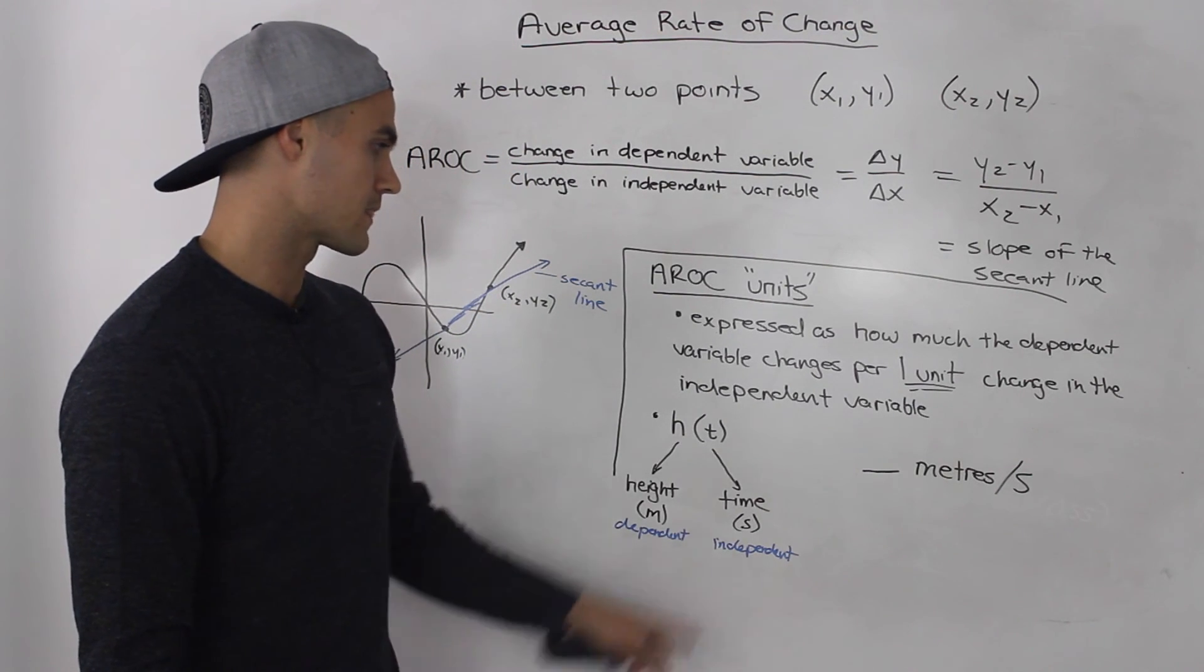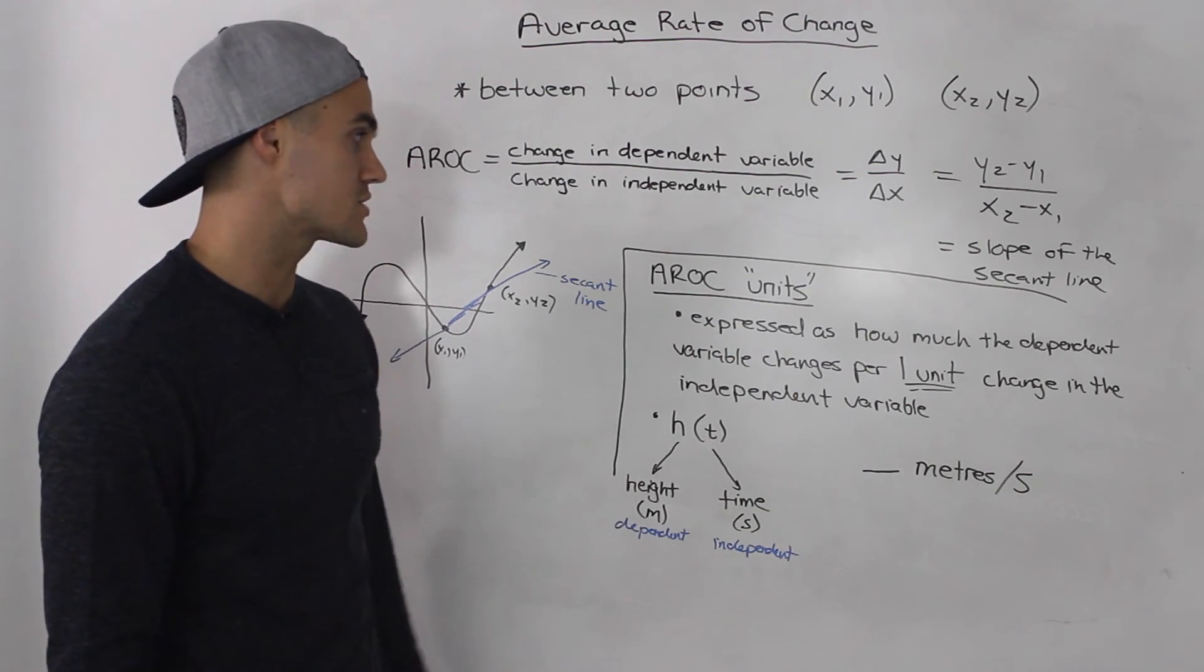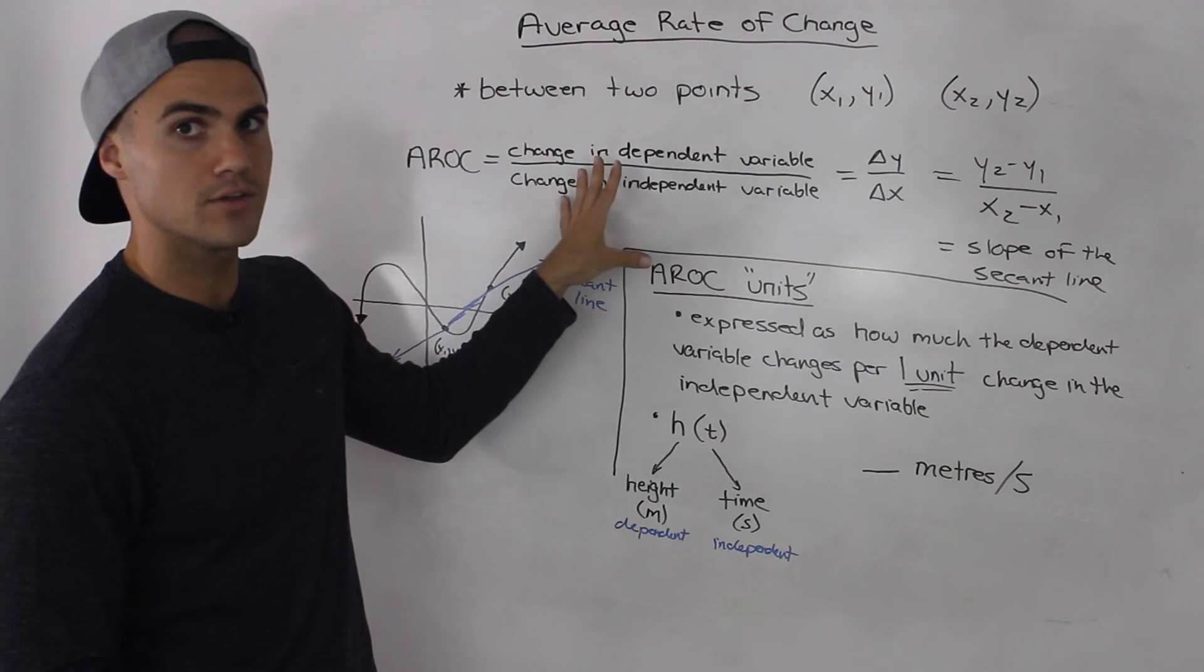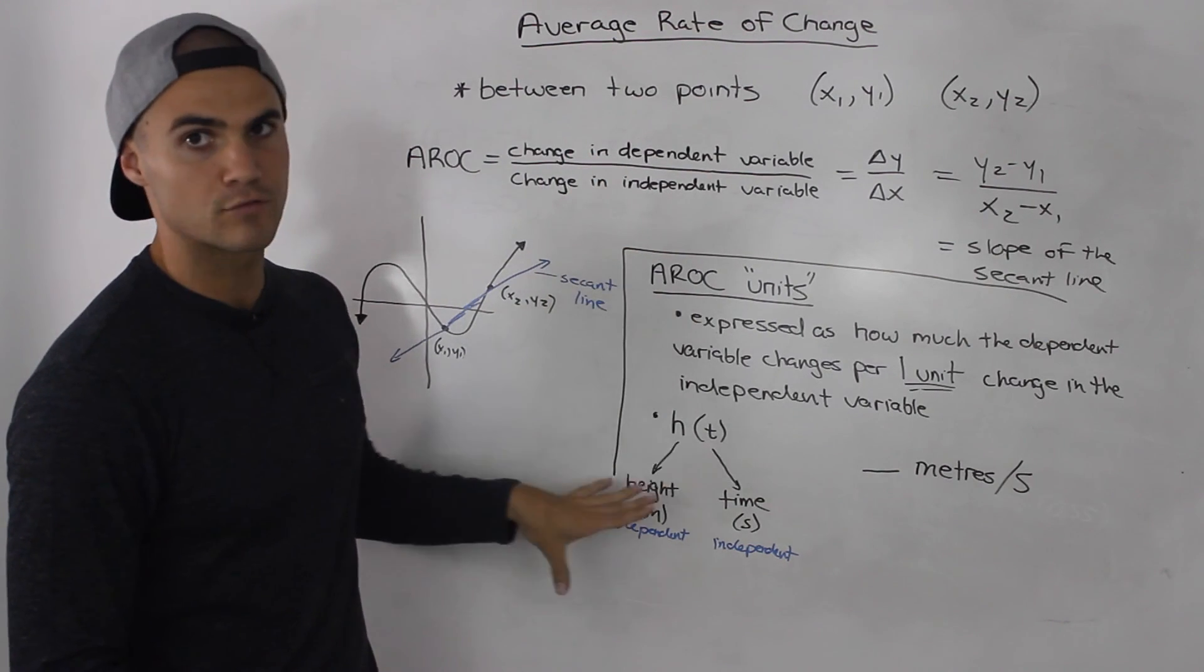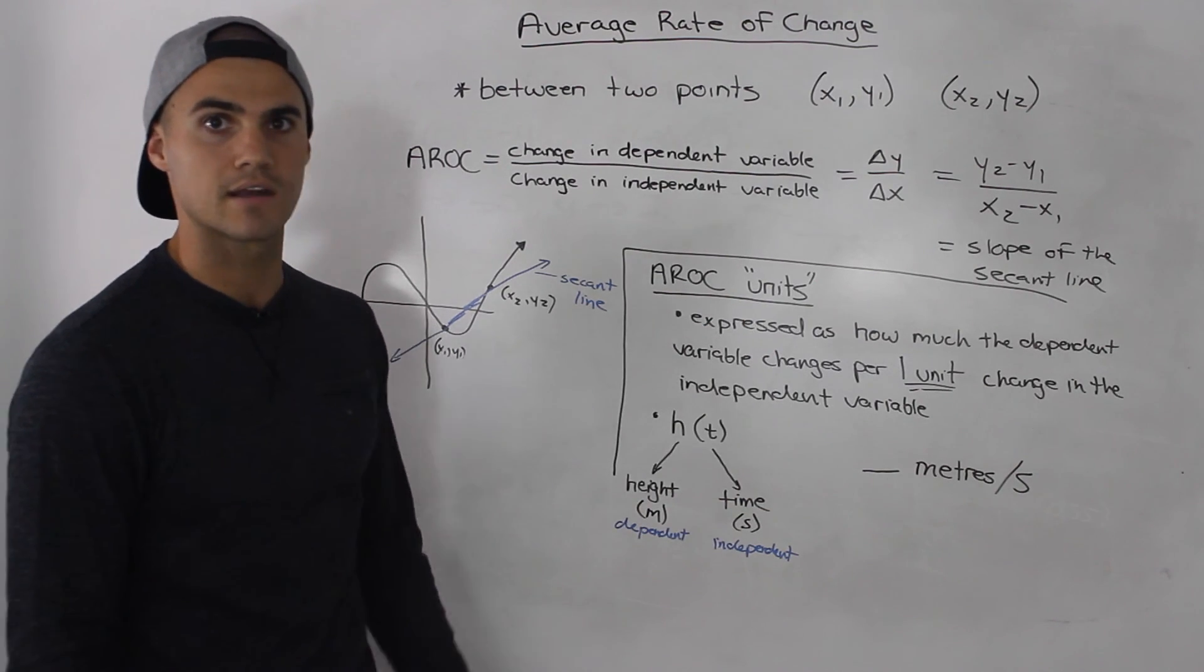We'll go over that in more future examples in the next few videos. We're going to find average rate of change from a table of values, from an equation, and from a graph. We'll be sure to add in these units at the end as well.